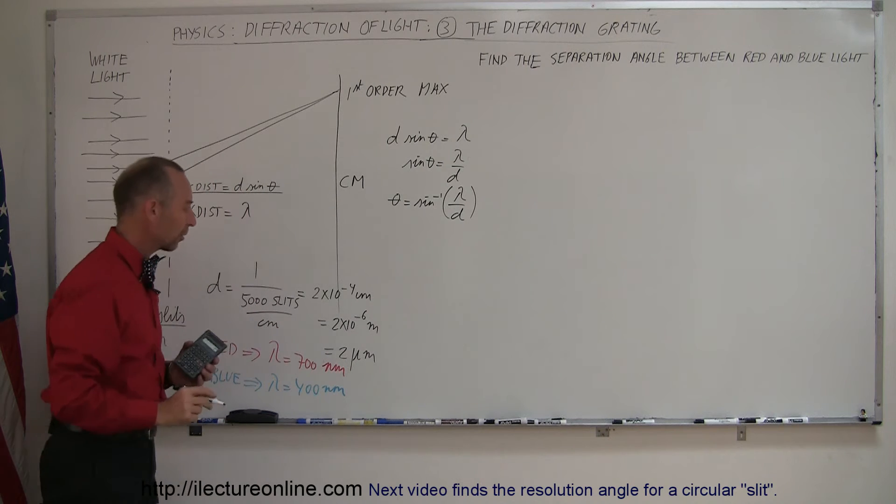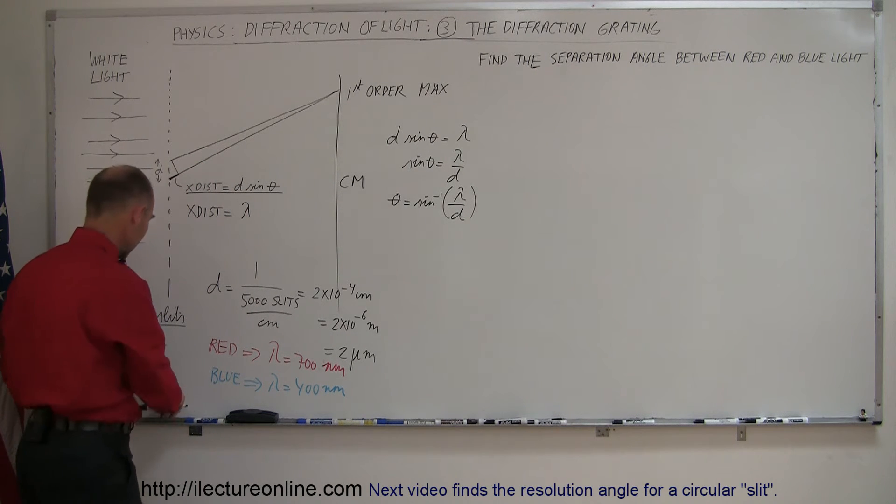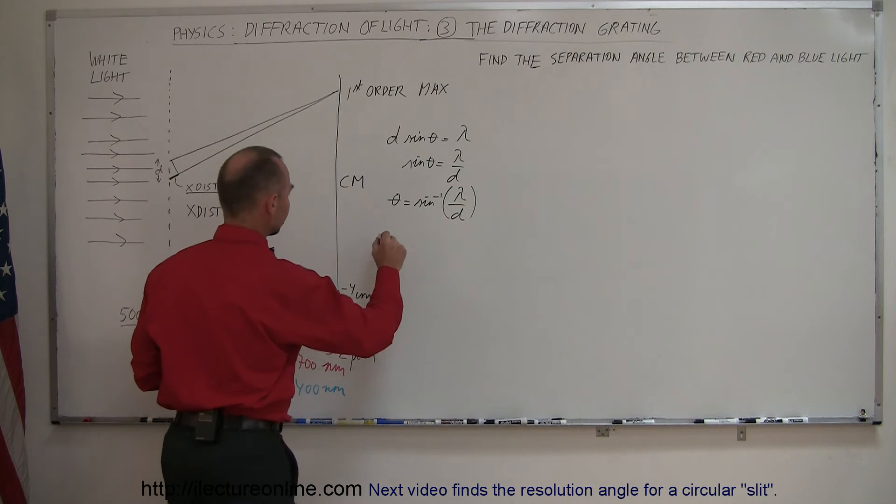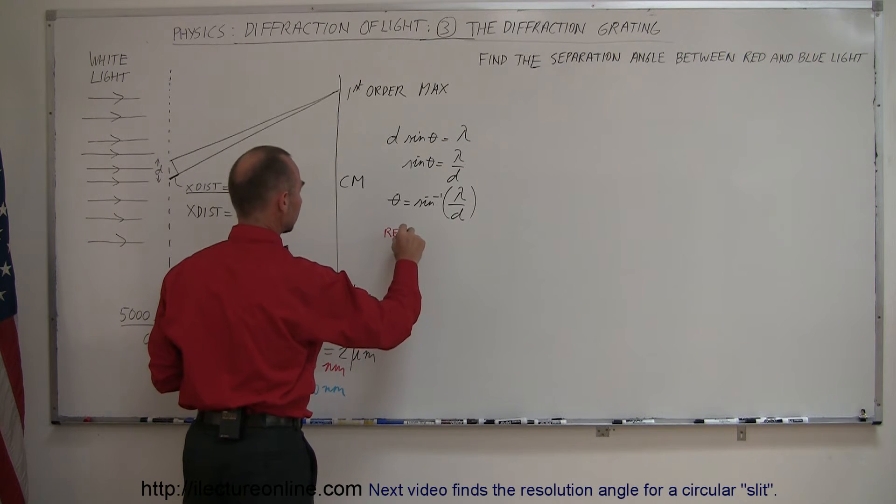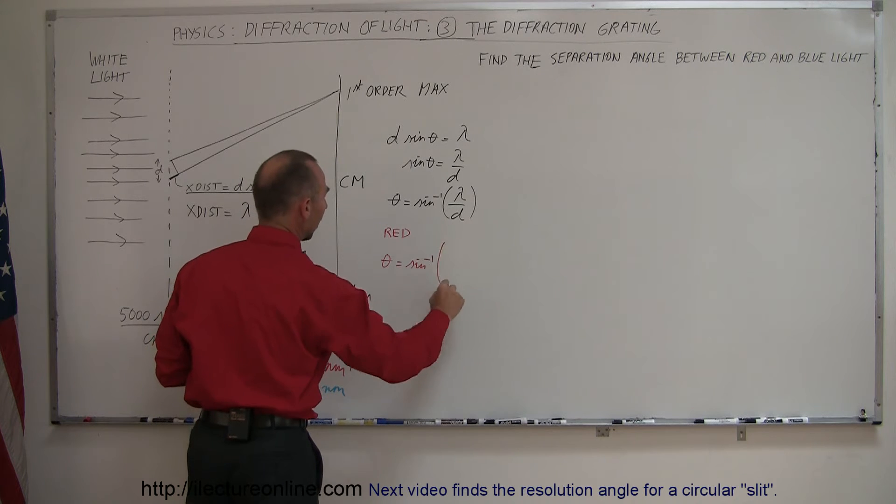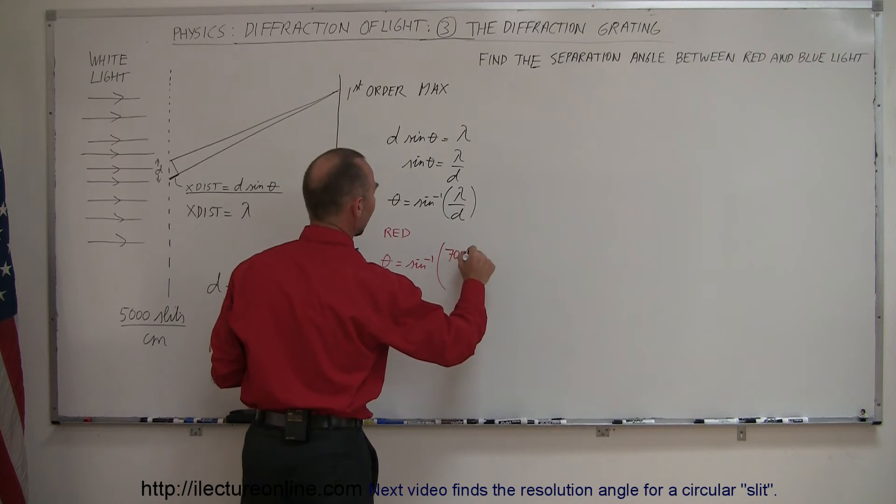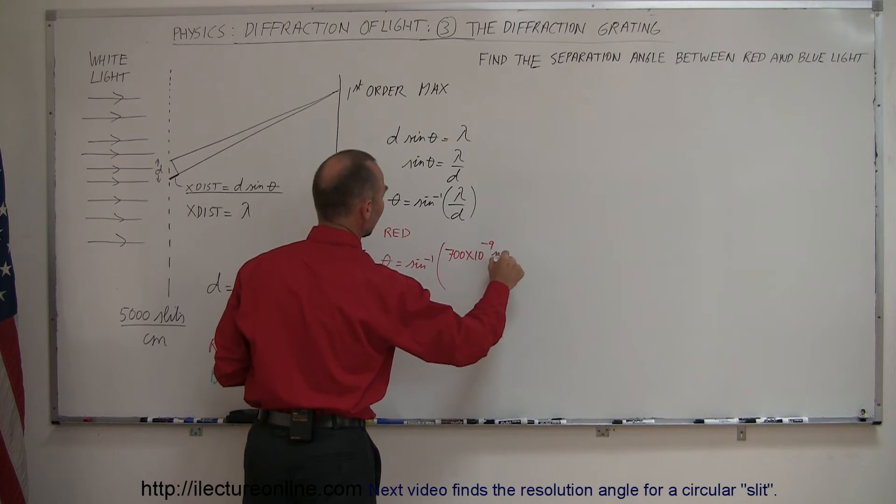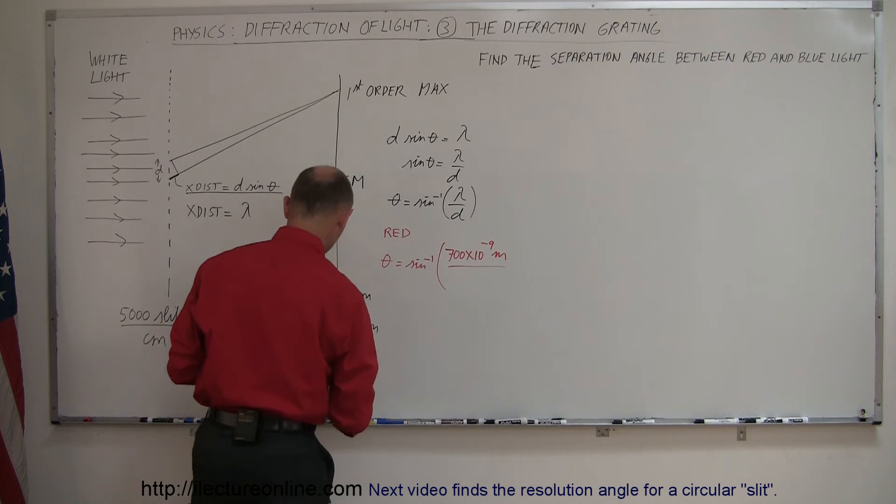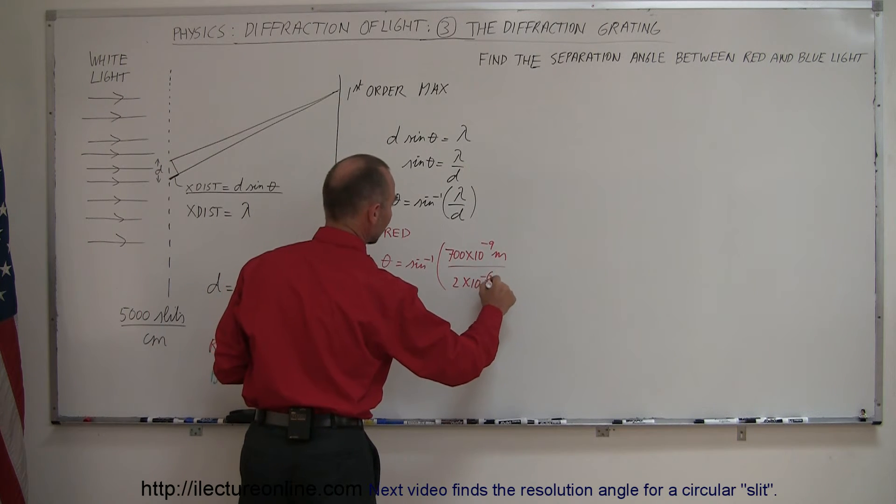Now d is found, it's two micrometers, and lambda will depend upon the color of light that we use. So if we first use red light, we can say that the angle is equal to the arc sine of lambda, in this case we're going to use 700 nanometers, 700 times 10 to the minus 9 meters, divided by the separation distance of 2 micrometers, which is 2 times 10 to the minus 6 meters.